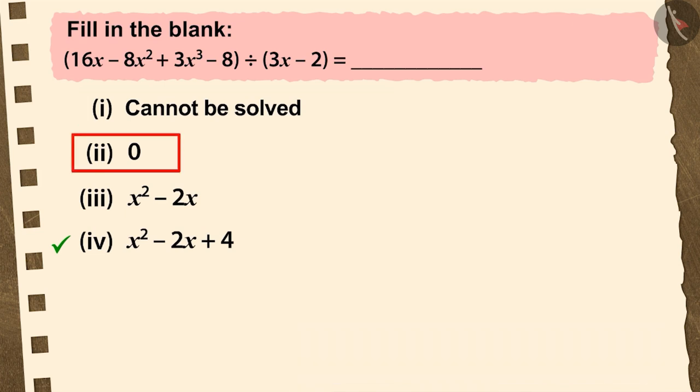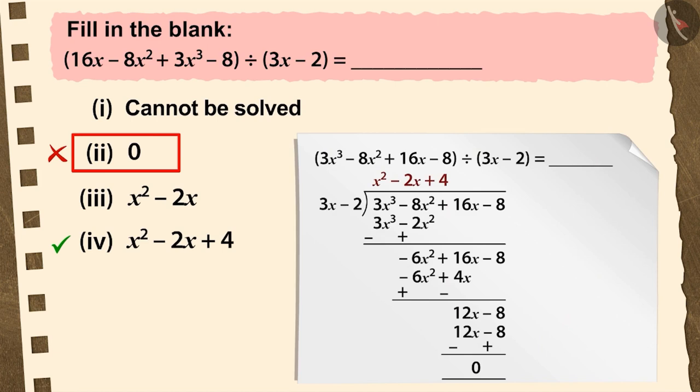If you have chosen the second option, it is a good try. But this is also an incorrect answer. Because in place of the quotient, you have chosen the remainder.